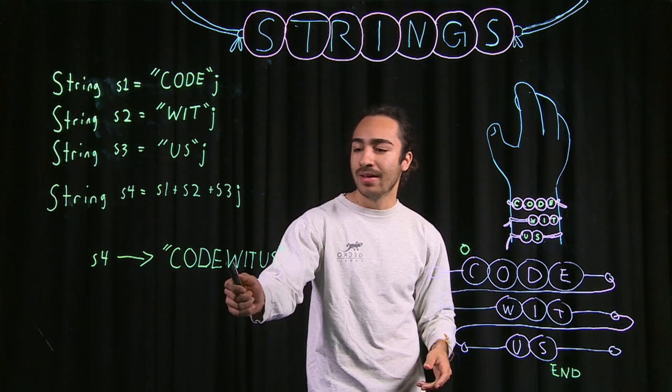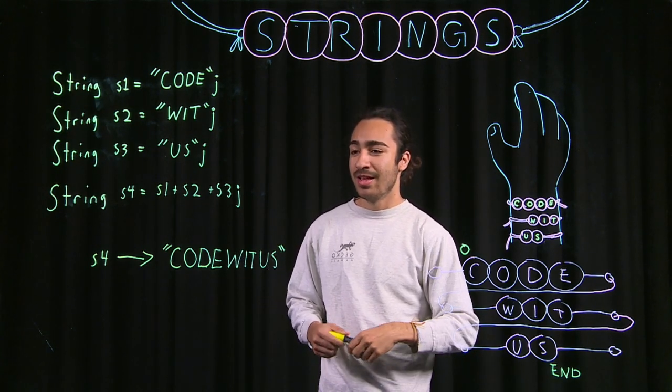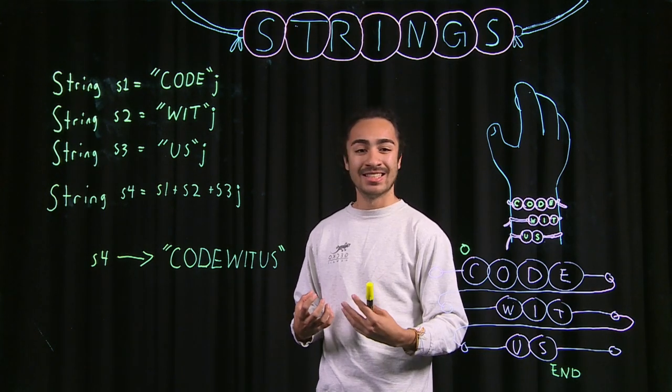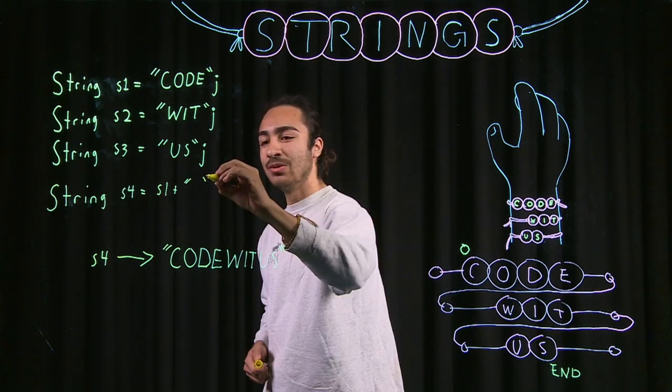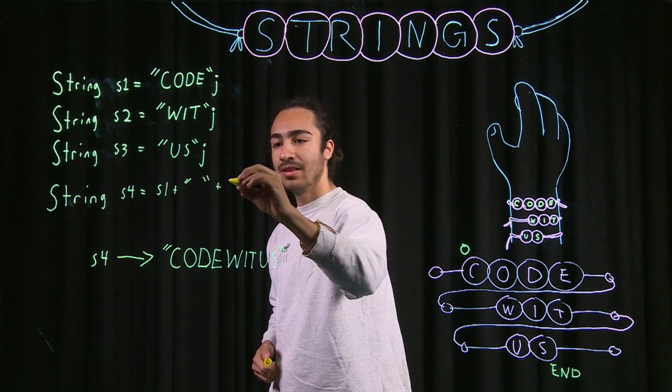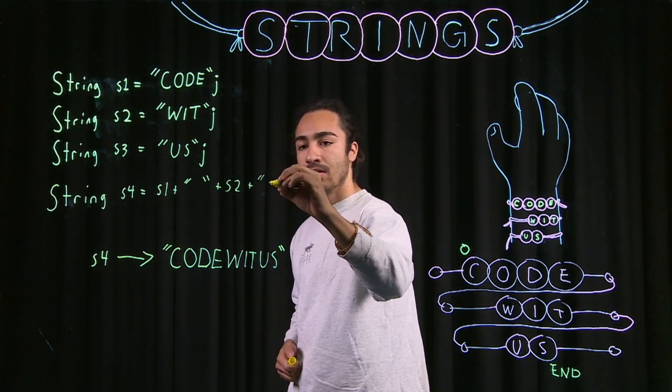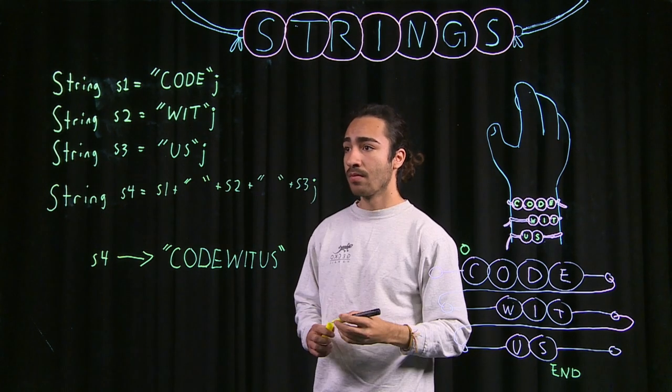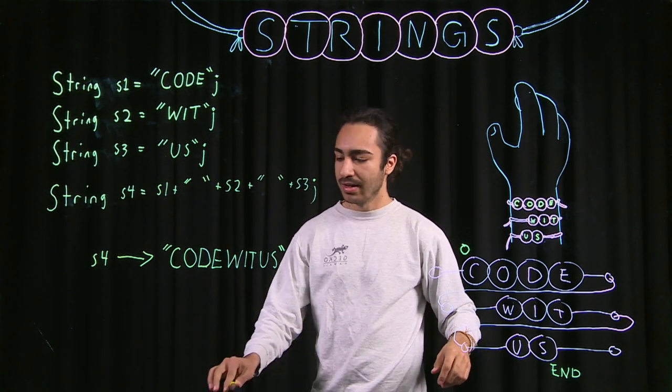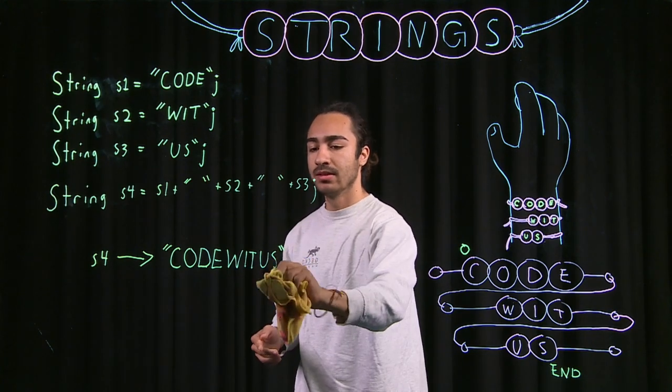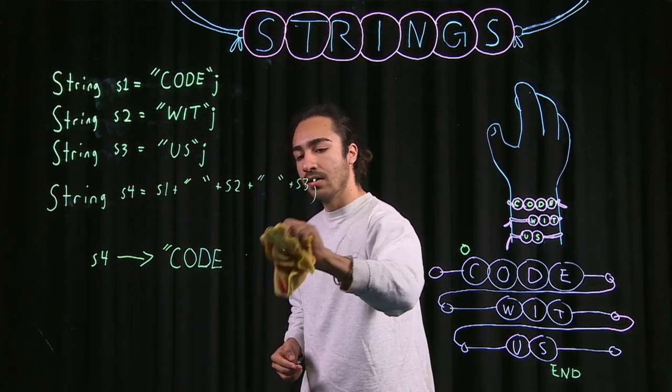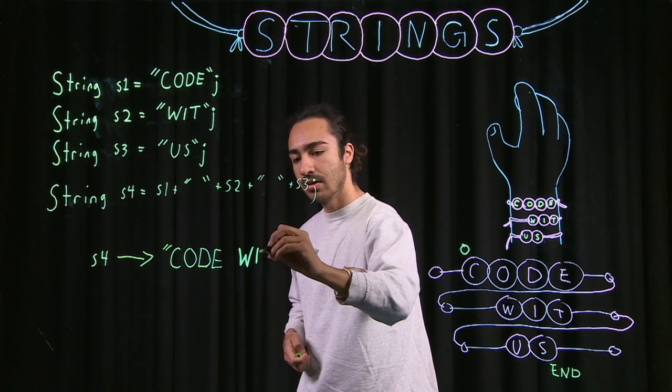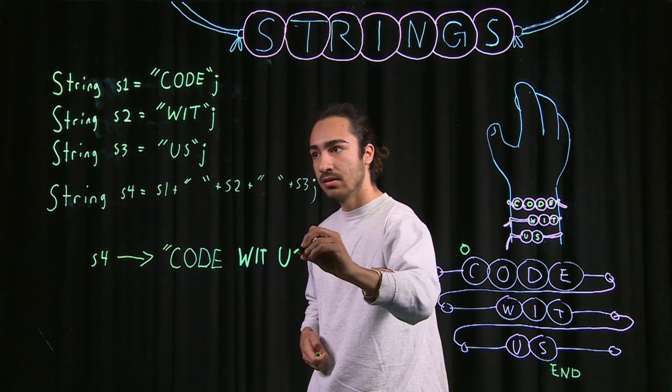There's nothing in between. And that's why when we do concatenation, we have to make sure that if you want spaces, we have to explicitly tell Java that. So just do a white space, then S-2, white space, and then S-3. And instead of this being code with us altogether, it'd be code space with space us.